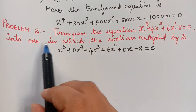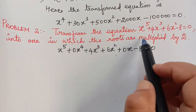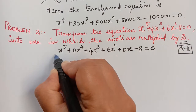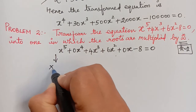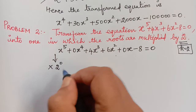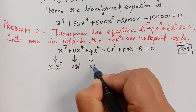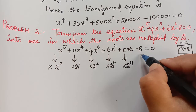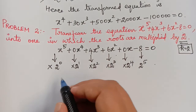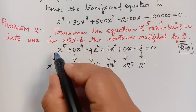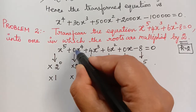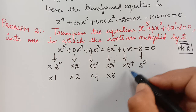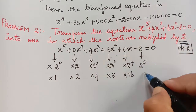They are asking us to transform this equation with roots multiplied by 2, so k = 2. The coefficient of x power 5 is multiplied by 2 power 0; the next by 2 power 1; then 2 squared; then 2 power 3; then 2 power 4; and the constant term by 2 power 5. So the multipliers are 1, 2, 4, 8, 16, and 32 respectively.